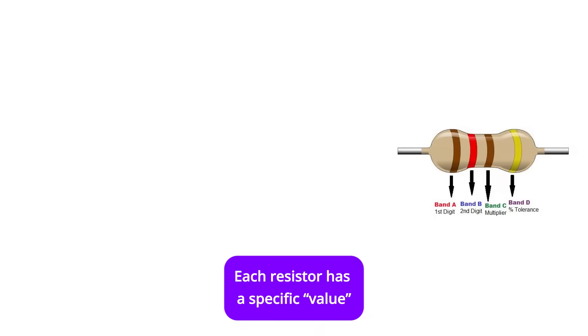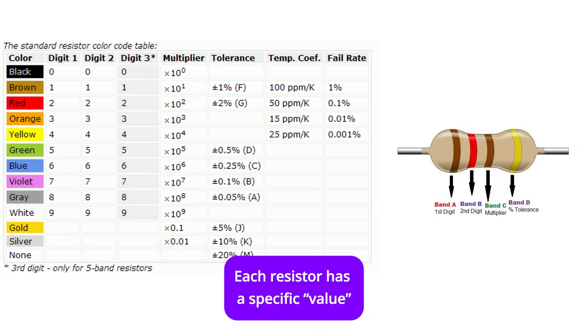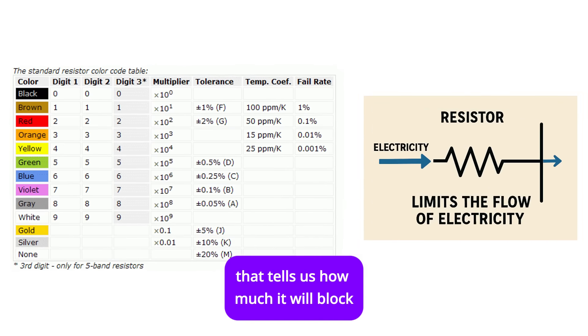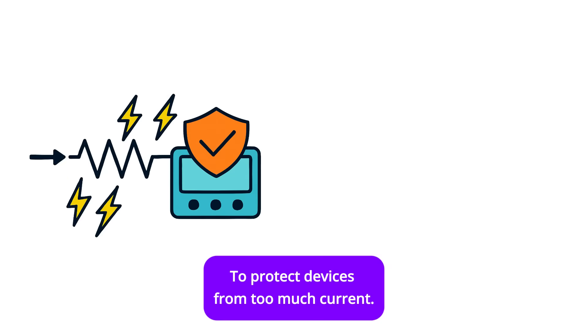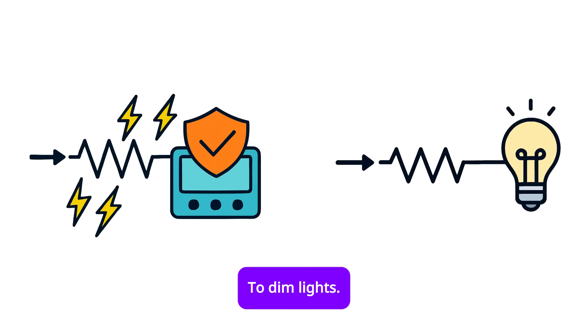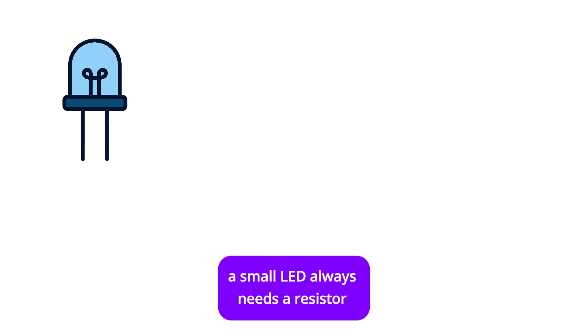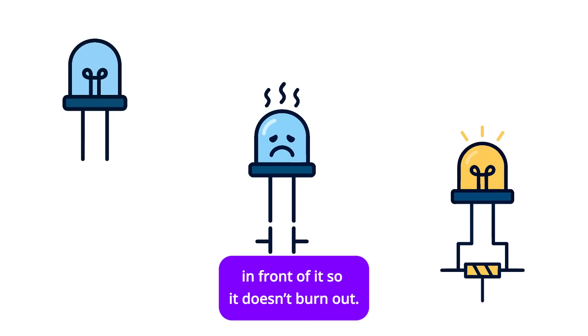Each resistor has a specific value that tells us how much it will block or limit the flow of electricity. Where is it used? To protect devices from too much current, to dim lights. For example, a small LED always needs a resistor in front of it so it doesn't burn out.